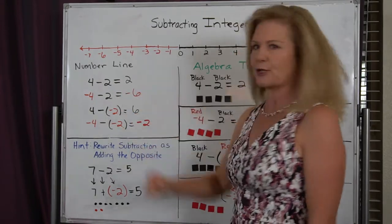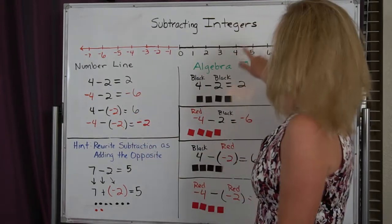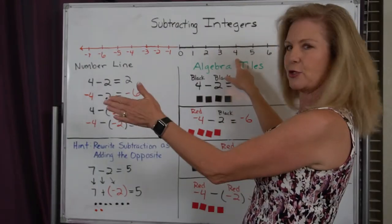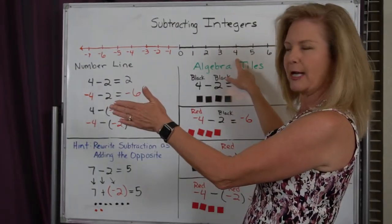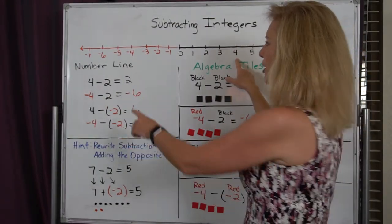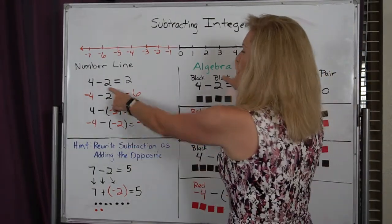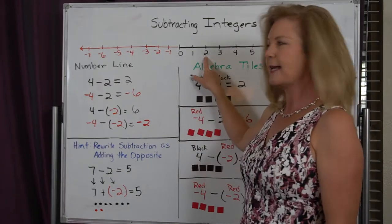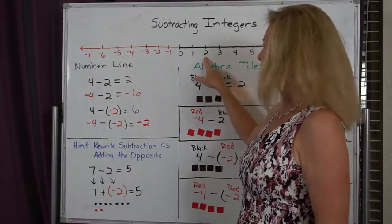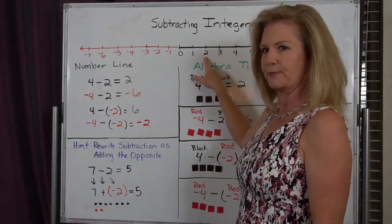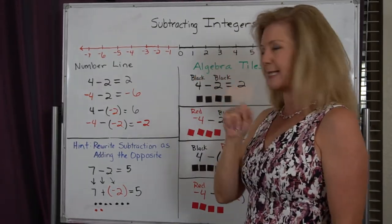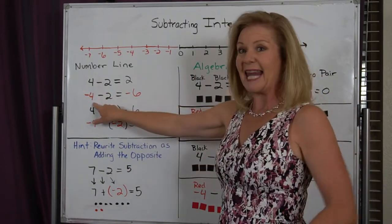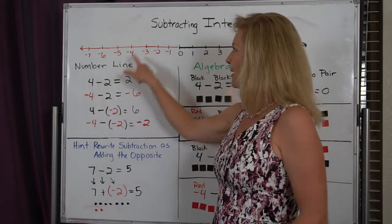Let's try the first one. I'm going to start at 4, I face towards the smaller numbers, and I'm going to walk forward two places. Therefore, 4 minus 2 equals 2.